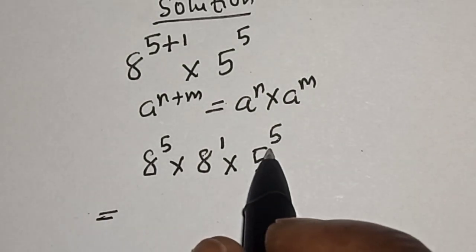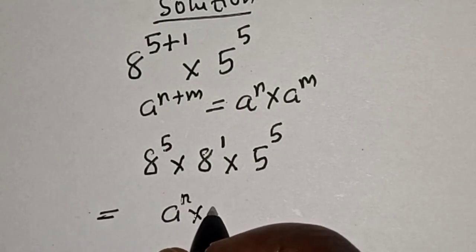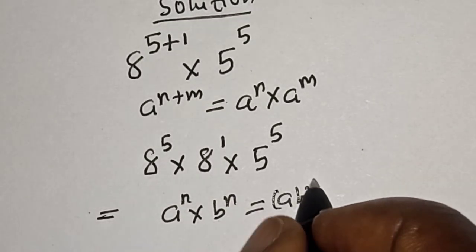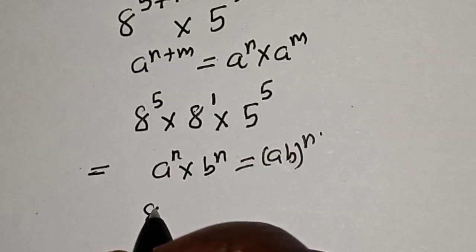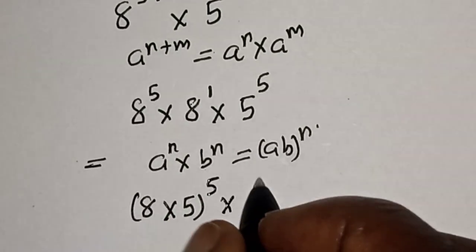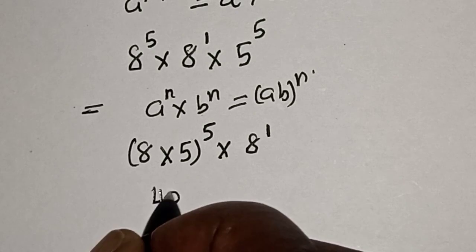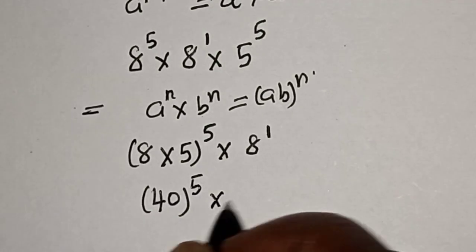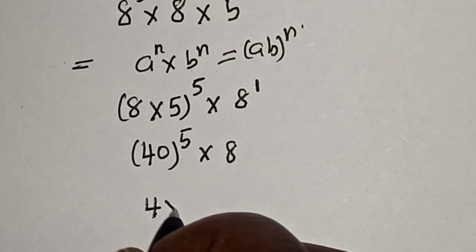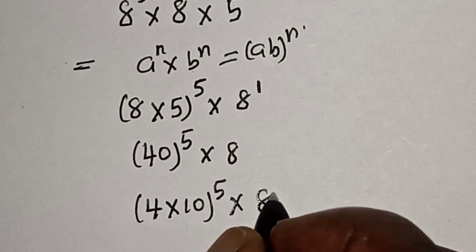So this becomes 8 raised to power 5, multiplied by 8 raised to power 1, then multiplied by 5 raised to power 5. Remember, this is 8 raised to power 5 and this is also 5 raised to power 5 — the same power. If you have a raised to power n multiplied by b raised to power n, this is equal to (ab) raised to power n. So we have 8 multiplied by 5, raised to power 5, multiplied by 8 raised to power 1. 8 multiplied by 5 is 40, raised to power 5, then multiplied by 8.